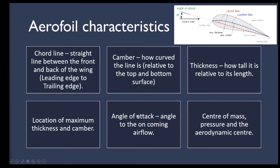Angle of attack is the angle to the oncoming airflow — in a wind tunnel it's the angle your wing makes to the incoming wind, or when flying in still air, it's the angle your wing makes flying through that air. Finally, centre of mass, centre of pressure, and aerodynamic centre are aerodynamic properties. Probably the most important is CG or centre of mass — basically your balance point, like the midpoint of a seesaw with equal mass on each side.